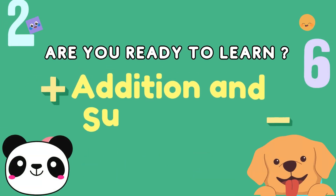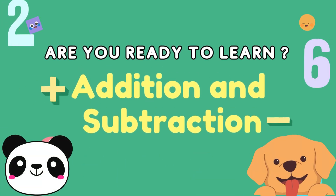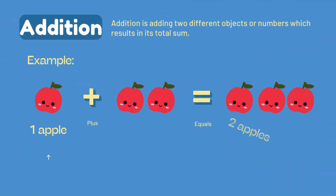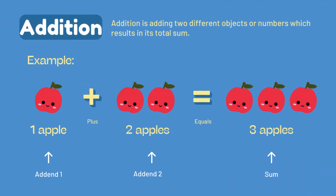Today we are going to learn about addition and subtraction. Are you ready? Let's begin! Addition is adding two different objects or numbers, which results in its total sum. For example, one apple plus two apples equals three apples.